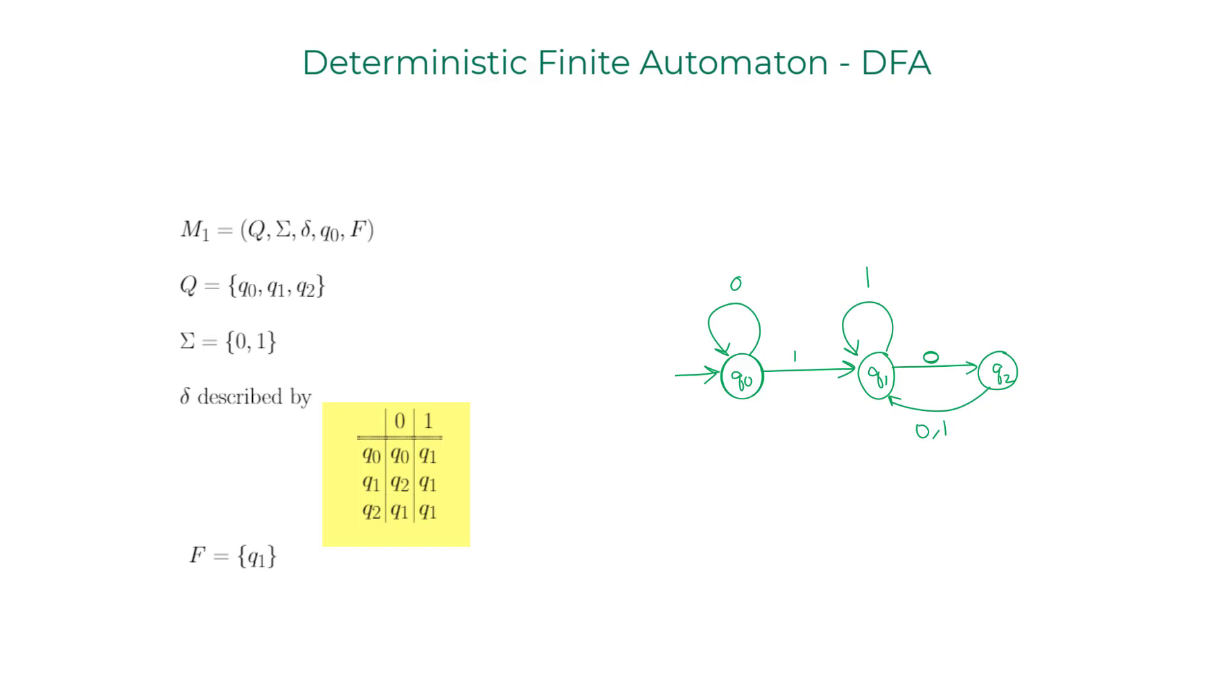Finally, the final states for this DFA. It's only one state, so I'm going to draw a circle around Q1. So that's it. I hope you'll be comfortable drawing a DFA if you're given a 5-tuple description like this.